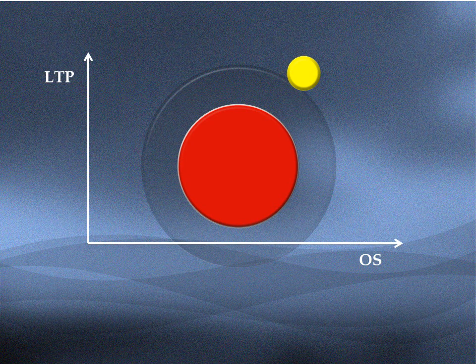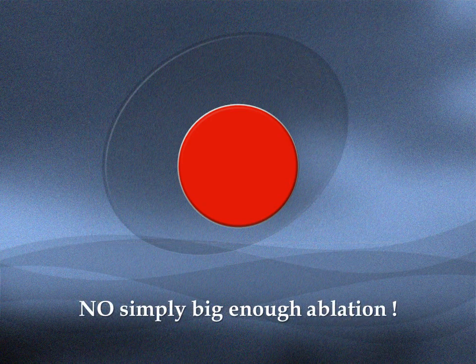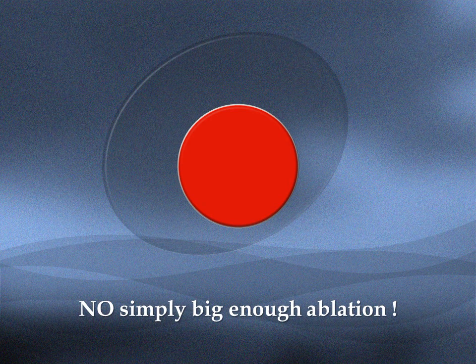We need to clarify this further through well-designed comparative studies. We need to try to achieve circumferential optimal ablative margin as much as we can. However, we should also avoid simply performing big-enough ablation without considering the hepatic reserve.